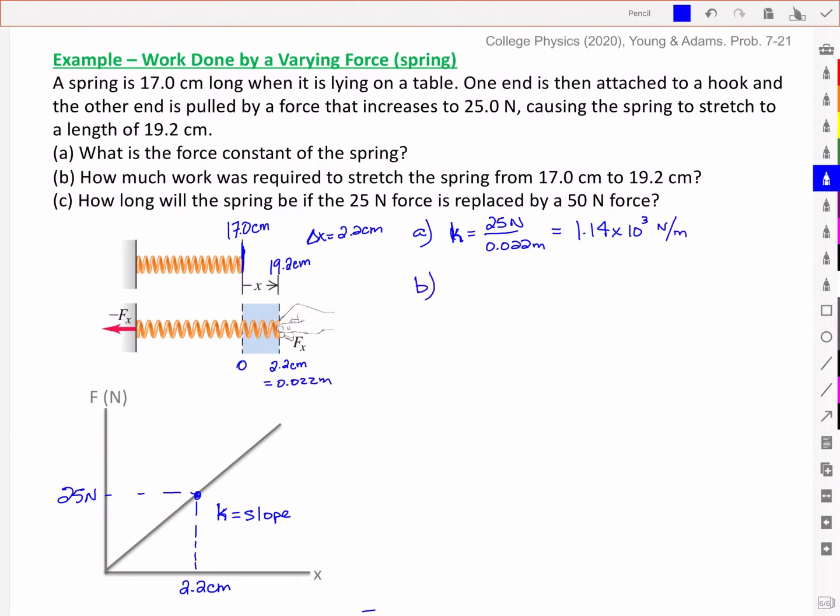Part B asks us for how much work was required to stretch the spring from 17 cm to 19 cm. My work for an elastic force is given by that one half k xf squared minus one half k xi squared. And then I will simply plug in my values. I've got an initial zero position and a final position of 0.022 m. And that gives me then a work of 0.275 joules.